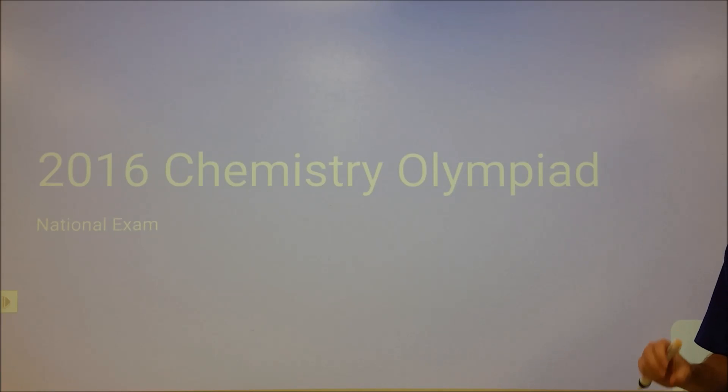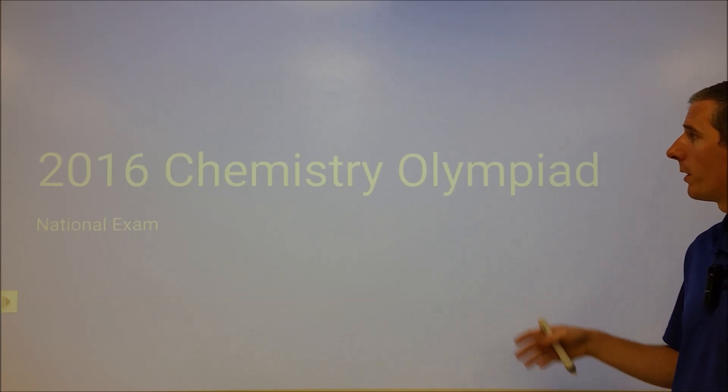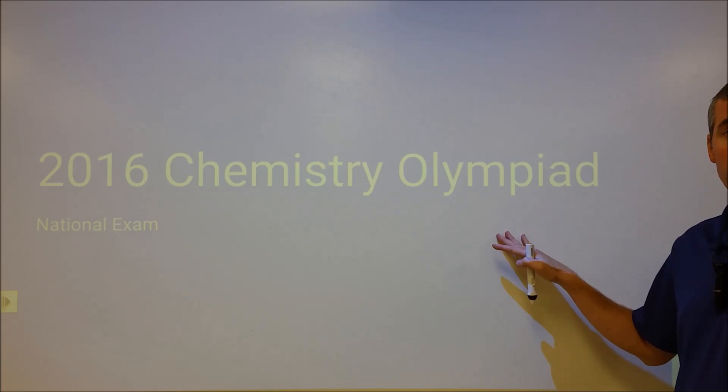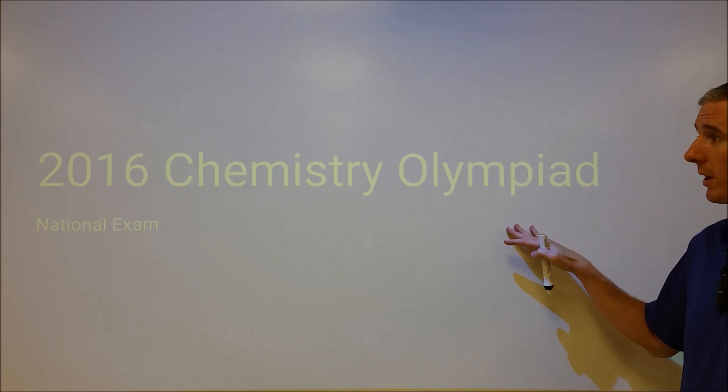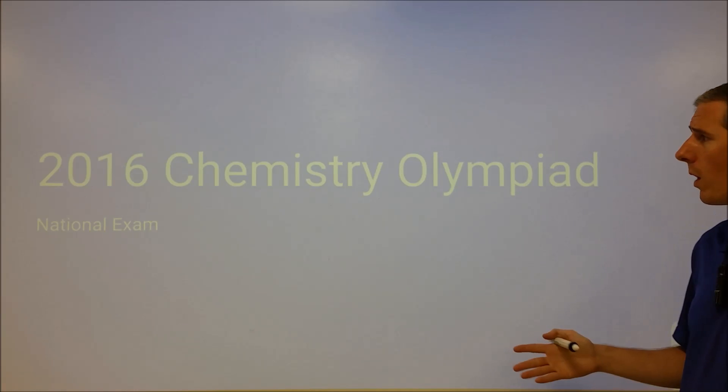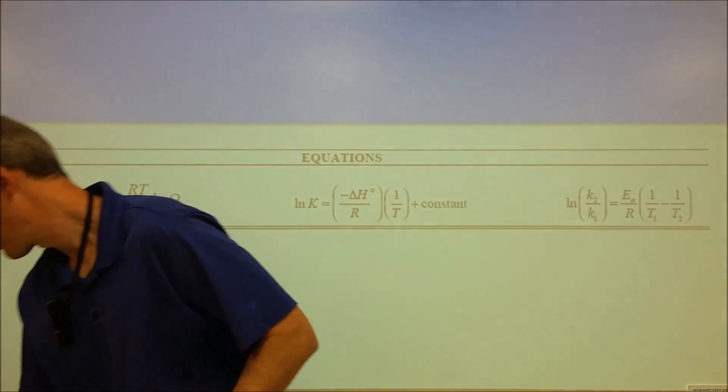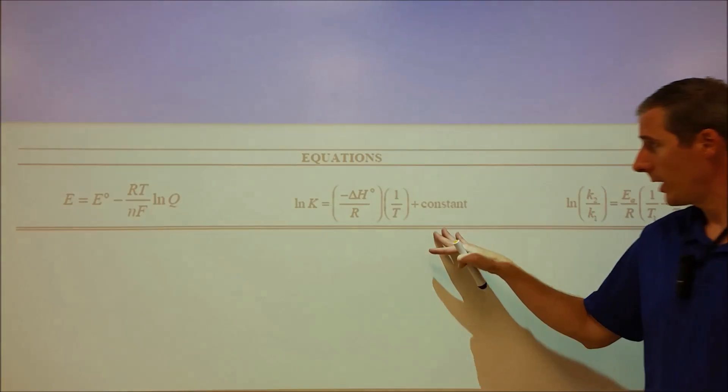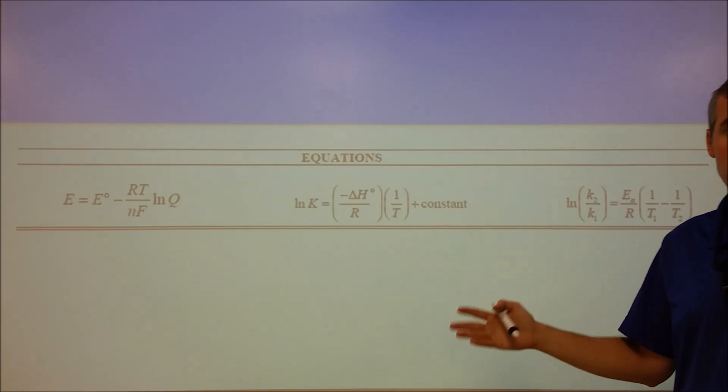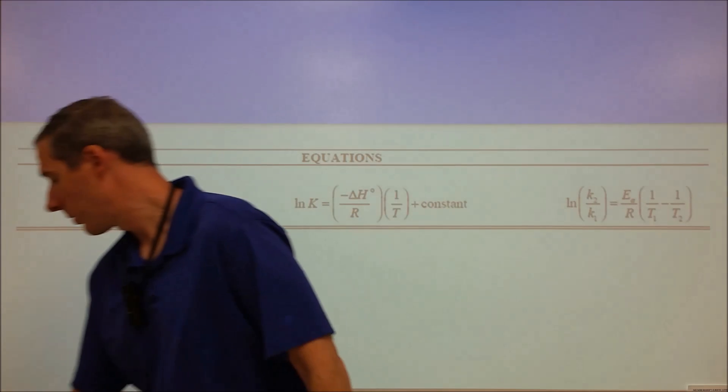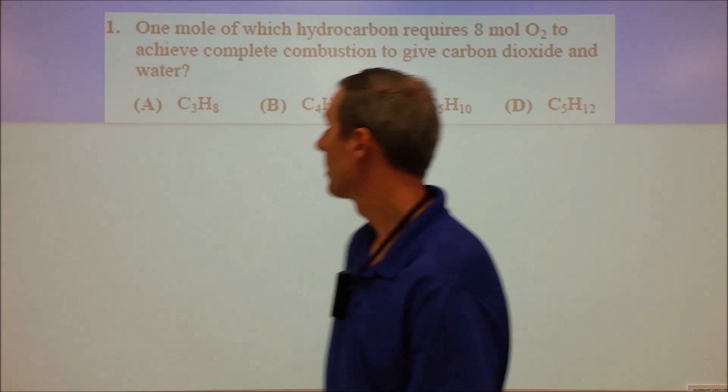2016 National Exam for the Chemistry Olympiad. This is the multiple choice, questions 1 through 60. I'm going to split this up in 10-question increments to keep the time frames reasonable. I'm going through all the questions. If you look in the description, you'll find a link to the exam so you can try it first if you want. On the exam you'll find a periodic table and three equations that will prop up as we get to problems that deal with those.